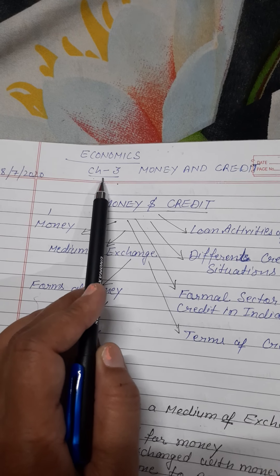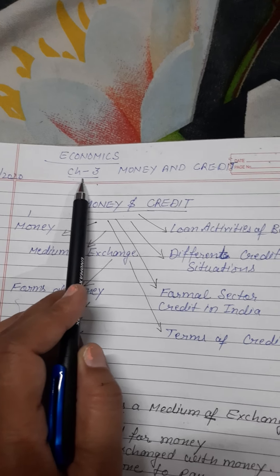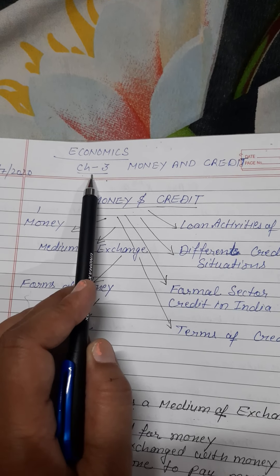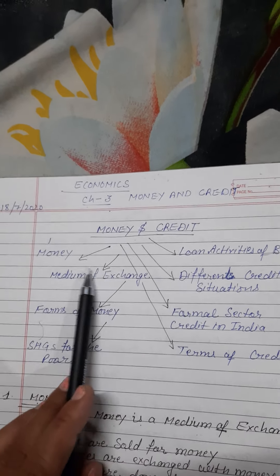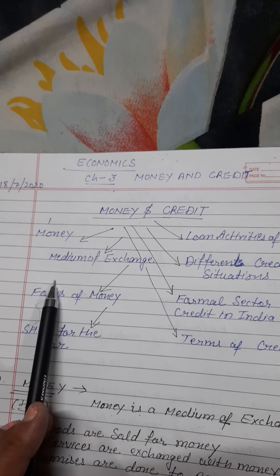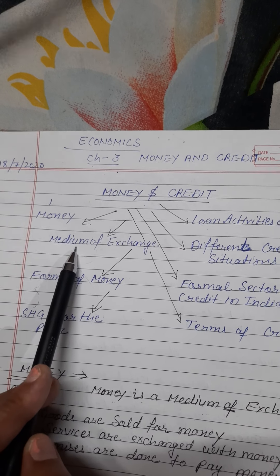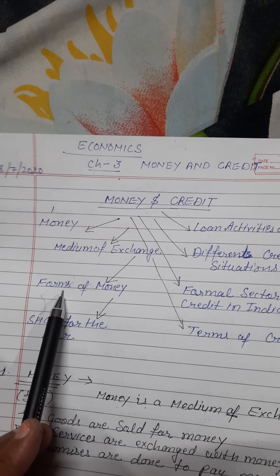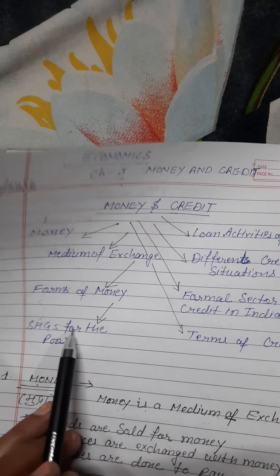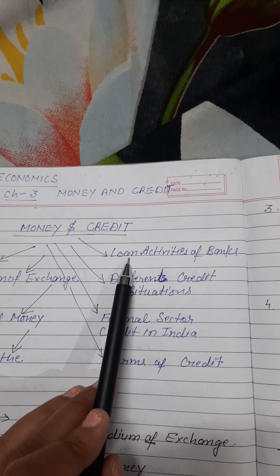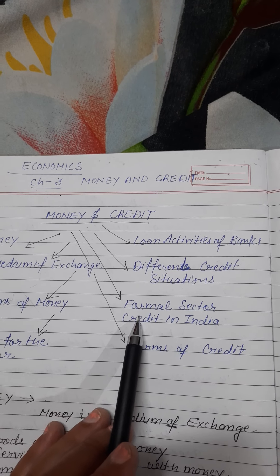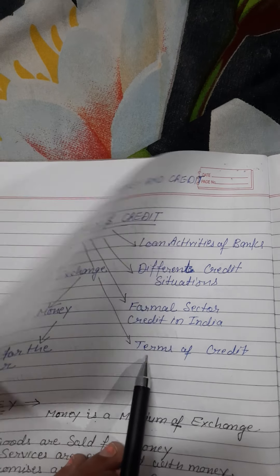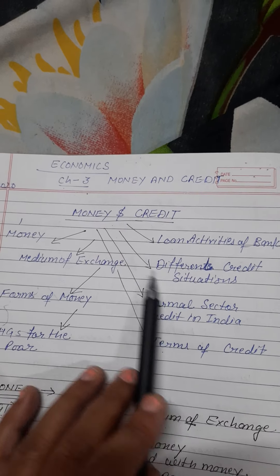Good morning dear students. Let's start a new chapter of economics — Chapter 3: Money and Credit. The important topics of this chapter are: money as a medium of exchange, forms of money, self-help groups for the poor, loan activities of banks, different credit situations, formal sector credit in India, and terms of credit.